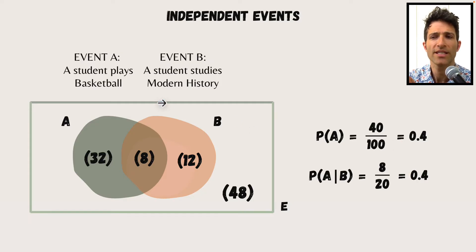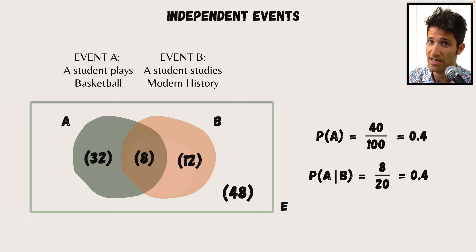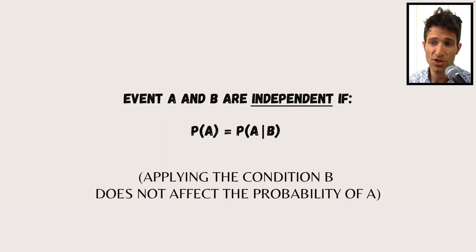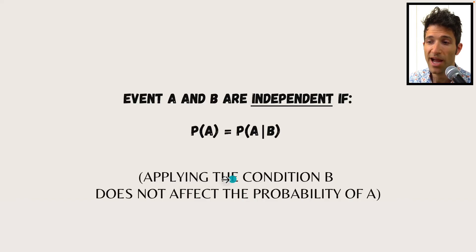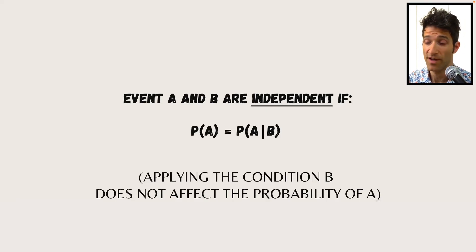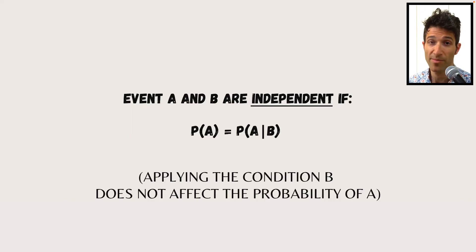You can only assess independence — and indeed, these are independent events — through looking at the numbers. If we look at the definition of independence: event A and B are independent if the probability of A is equal to the probability of A given B. In brackets: applying the condition B does not affect the probability of A. In our case, applying the condition that a student studies modern history didn't affect their probability of playing basketball.